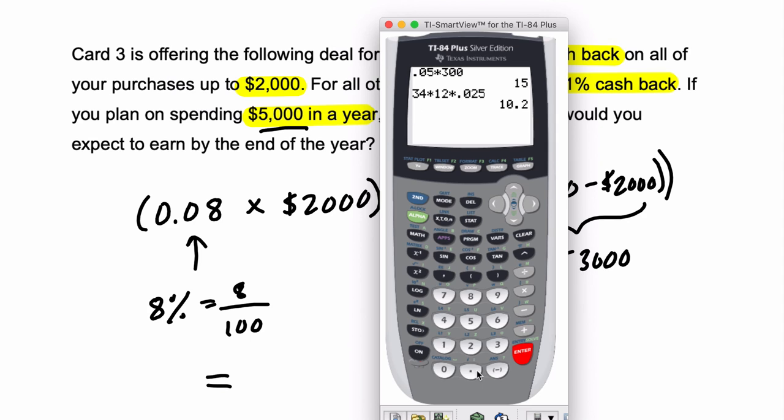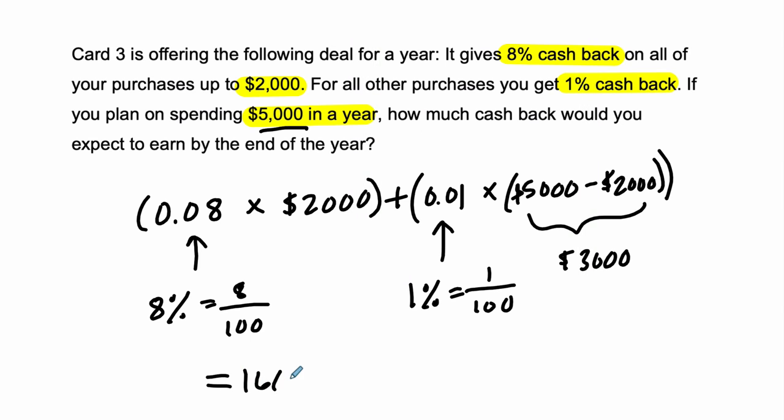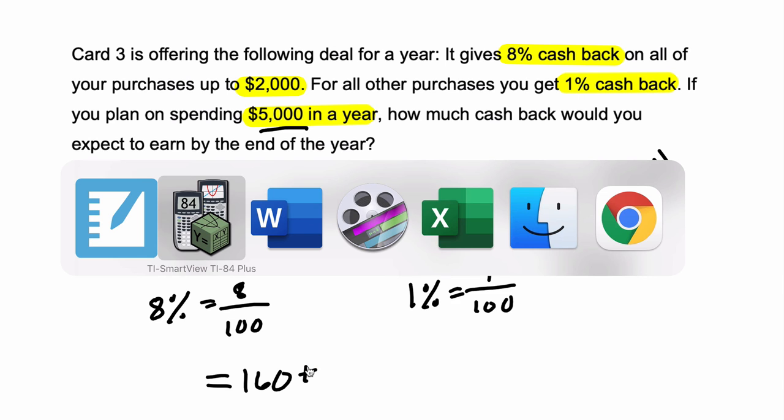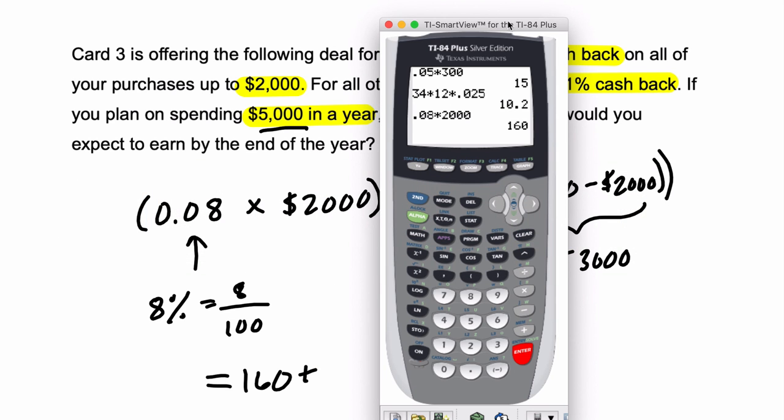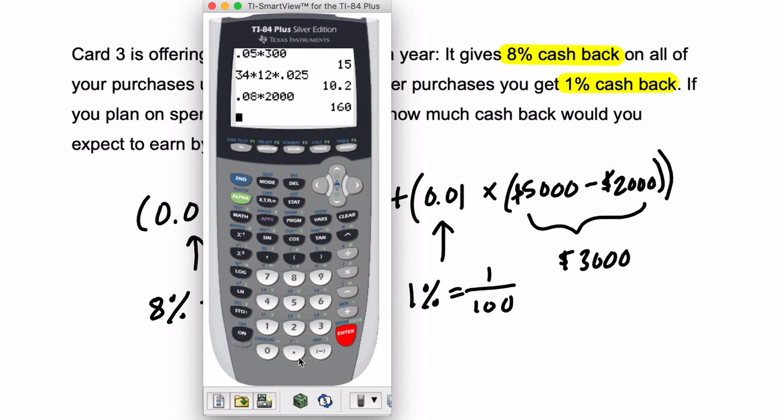So, it's going to be 0.08 times 2,000. That's $160 on the first part of our deal. Pretty good. And then, we're spending $3,000 more, right? 5,000 minus 2,000 times 0.01. So, 0.01 times 3,000. That's $30.